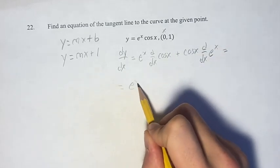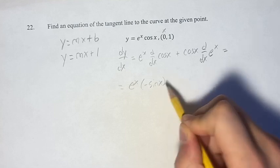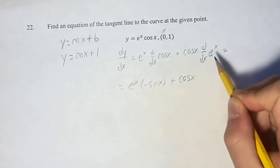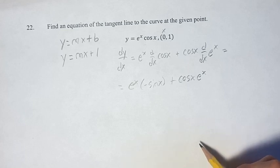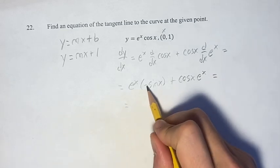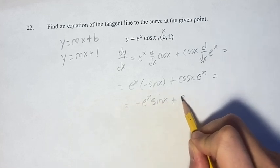This is going to be equal to e to the x times the derivative of cosine x is negative sine x plus cosine x. And the derivative of e to the x is just e to the x. So simplifying this one more step, we have negative e to the x sine x plus e to the x cosine x.